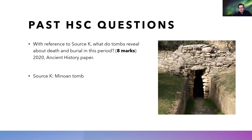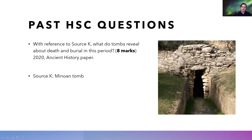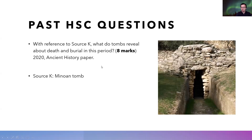When we're doing burials and tombs, this is an example of what an HSC question might look like: 'With reference to Source K, what do tombs reveal about death and burial in this period?' — an eight-mark question from last year's paper. You're given a source showing a Minoan tholos tomb. Even if they only give you one tomb, do not be mistaken — you have to talk about all the different types of tombs and burials, not just the one shown in the source.